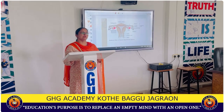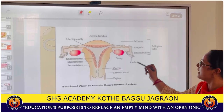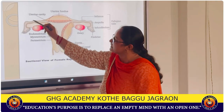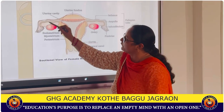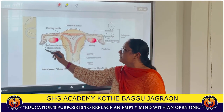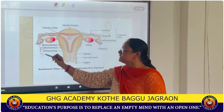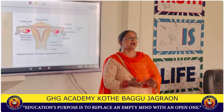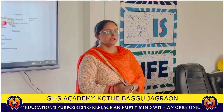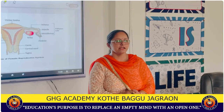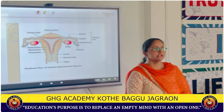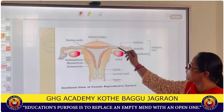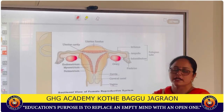We are going to discuss the female reproductive system. What are the parts of the female reproductive system? Number 1, a pair of ovaries, fallopian tubules, cervix, vagina, and one main part called the uterus.